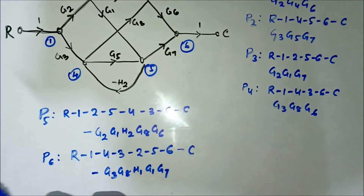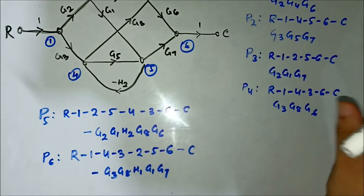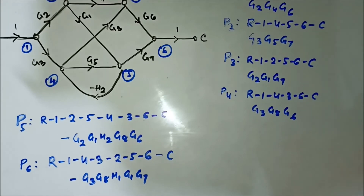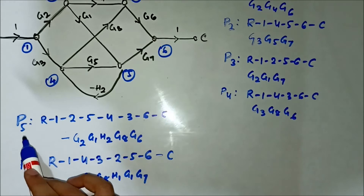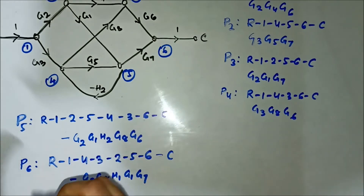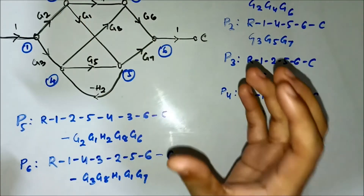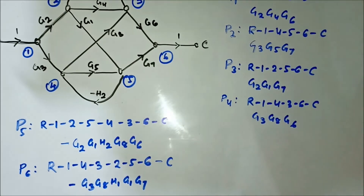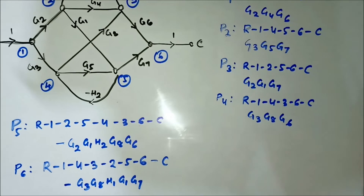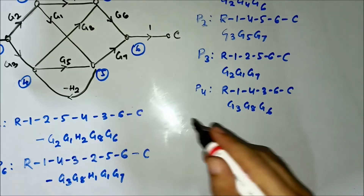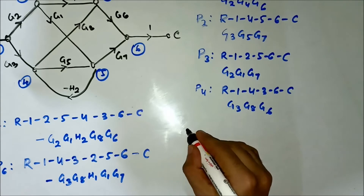So far we have identified six forward paths. The forward paths P5 and P6 can be a little bit difficult to identify at first because with so many arrowheads you can get easily confused. Now that the forward paths have been identified, we have to identify the loops. One of the loops is L1: 2 → 3 → 2, with loop gain −G4 × H1.